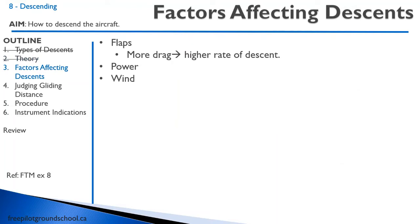There are three main factors that affect descents. First, flaps — when we put our flaps out, we have more drag, and more drag means a higher rate of descent. Second, power — the more power we have on, the less we will descend. Third, wind — if we are flying into a headwind, the aircraft will sink at the same rate but will not glide as far forward.